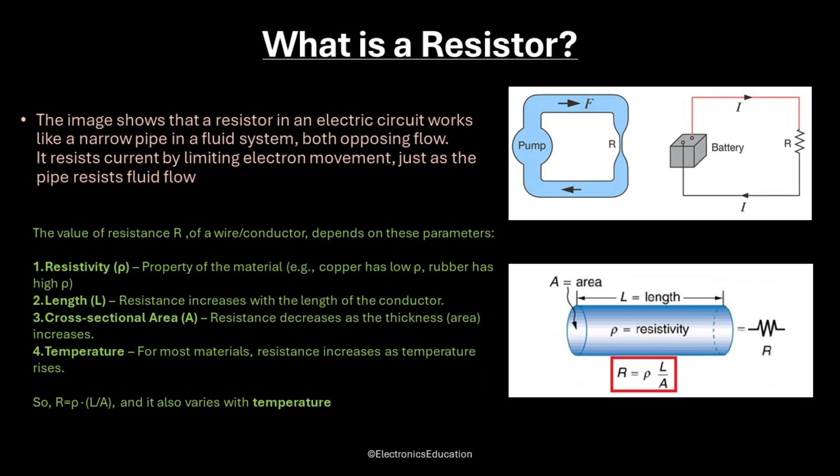The image at the top shows that a resistor in an electric circuit works like a section of a narrow pipe in a fluid system, both opposing the flow. It resists current by limiting electron movement, just as the pipe resists fluid flow. The bottom image shows the parameters on which the value of resistance of a wire depends.